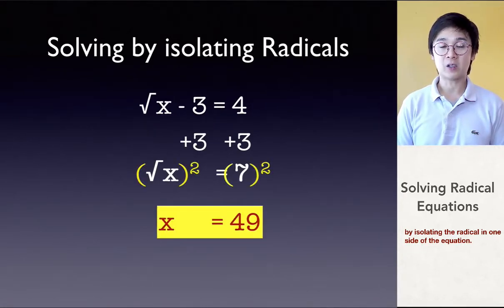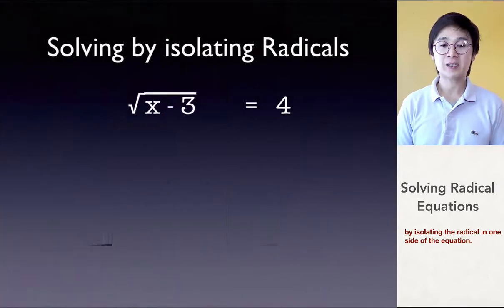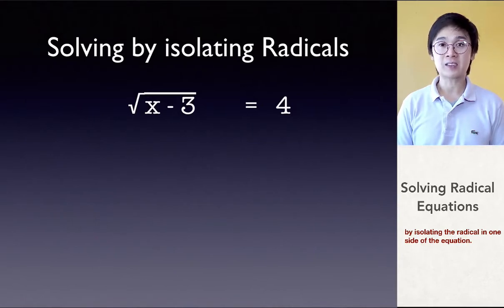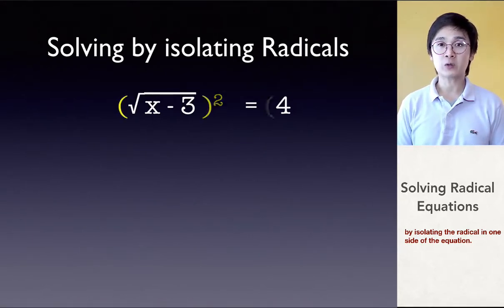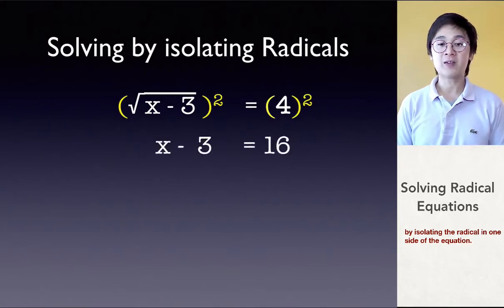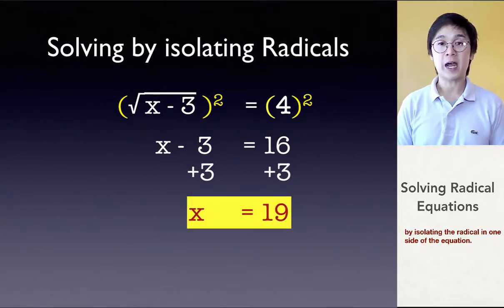So, x is equal to 49. Now, this equation — square root of x minus 3 equal to 4 — is quite different from square root of x minus 3 is equal to 4 when x minus 3 is inside the radical. So, when this happens, we know that the square root is already by itself. So, the only thing we're going to do is to square both sides, leaving us with x minus 3 is equal to 16. By solving for the equation, x is now equal to 19.